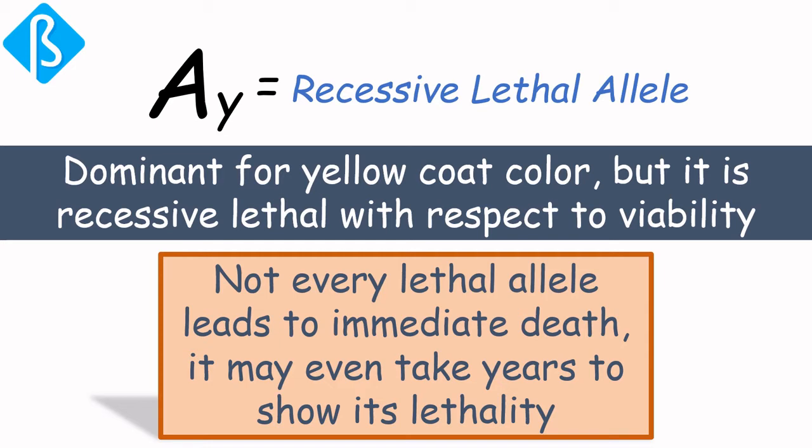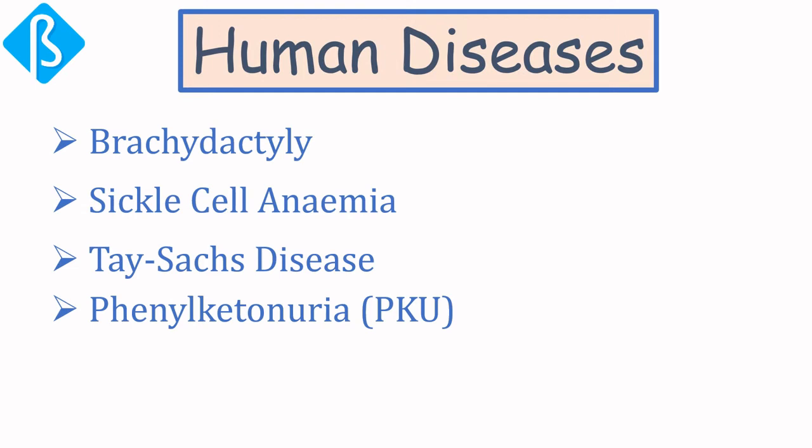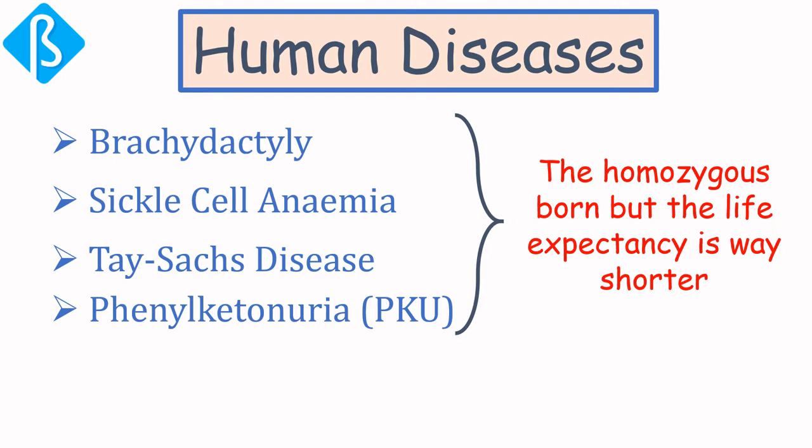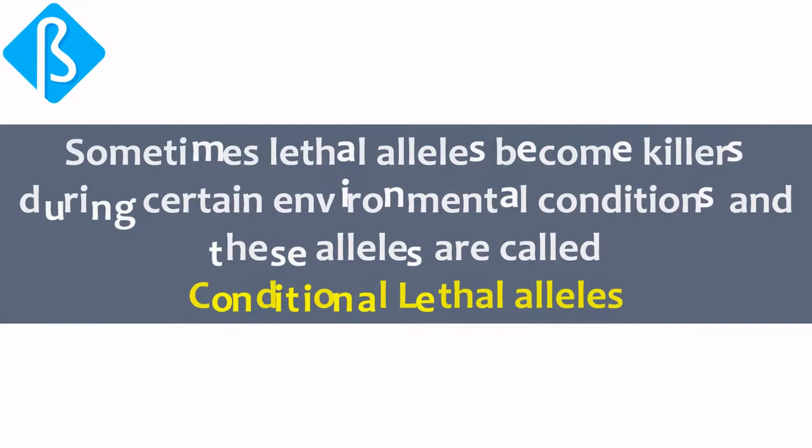Not every lethal allele leads to immediate death — it may even take years to show its lethality. For example, in human diseases like brachydactyly, sickle cell anemia, Tay-Sachs disease, and phenylketonuria, the homozygous individual is born but their life expectancy is much shorter. While in Huntington's disease, the homozygous individual gets affected after the age of 40.